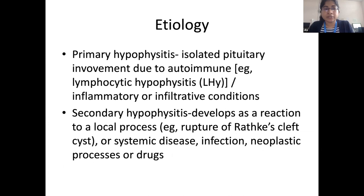Etiologies are broadly classified as primary or secondary. In primary hypophysitis, there is isolated pituitary involvement due to autoimmune, inflammatory, or infiltrative conditions. In secondary hypophysitis, it can develop as a reaction to a local process — for example, Rathke's cleft cysts — or systemic disease, infection, neoplastic process, or drugs.